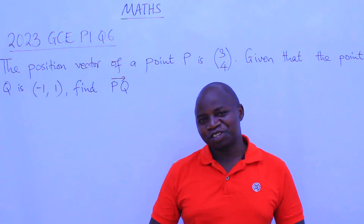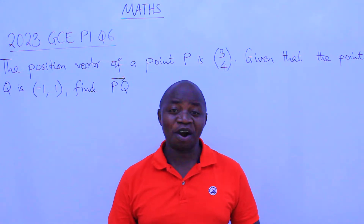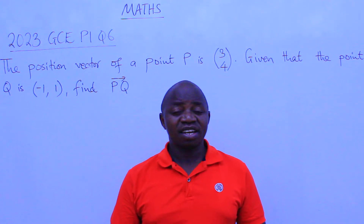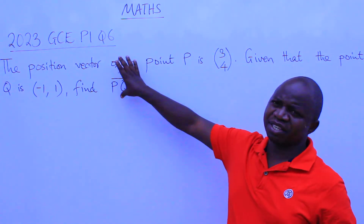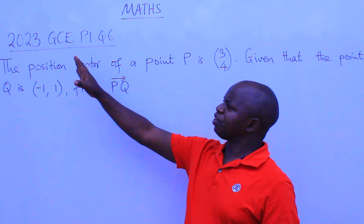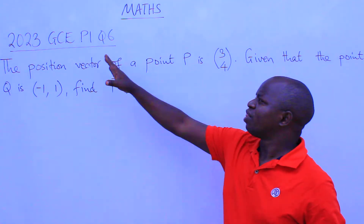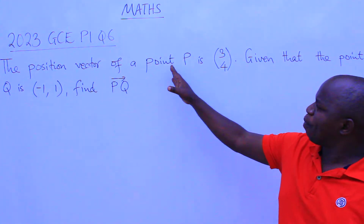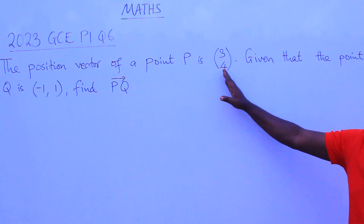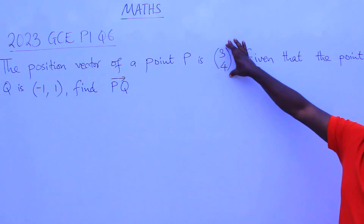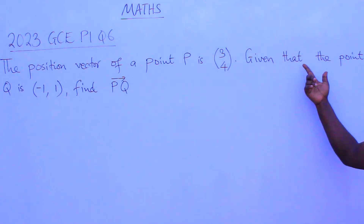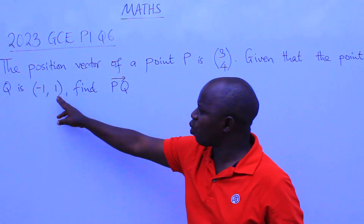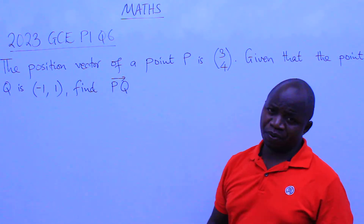Greetings ladies and gentlemen, hope you are well. This is mathematics. In this lesson we want to look at this question from the 2023 GCE paper one — this was question number six. The position vector of a point P is (3, 4). Given that the point Q is (-1, 1), find PQ.